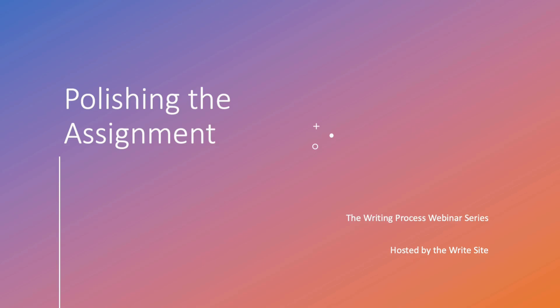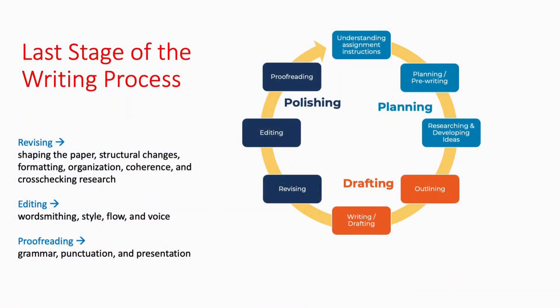Welcome to our final webinar on the writing process. The first webinar talked about the writing process as a general academic strategy. The second webinar looked at the first phase of planning, which is understanding assignment instructions, planning and pre-writing, and researching and developing ideas. The third webinar covered the drafting phase, which includes outlining and writing. And today we'll be talking about the final phase of the writing process: polishing.